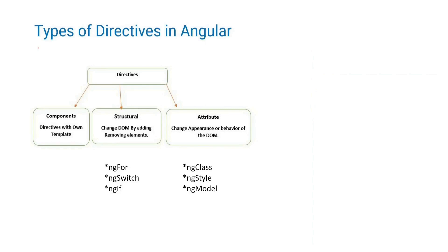Angular provides three types of directives: component directive, structural directive, and attribute directive. Component directives come with every component and have metadata properties. Structural directives help you alter the structure of your DOM tree — inserting new elements or deleting existing ones. Common examples are *ngFor, ngSwitch, and *ngIf.